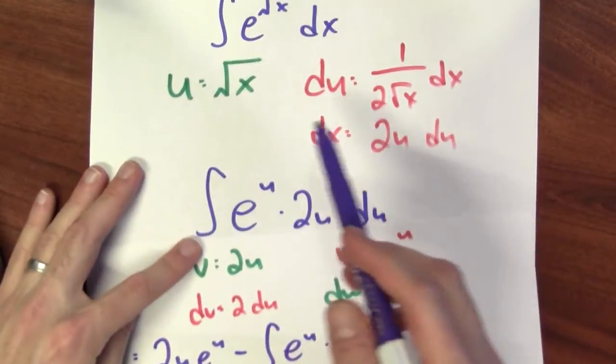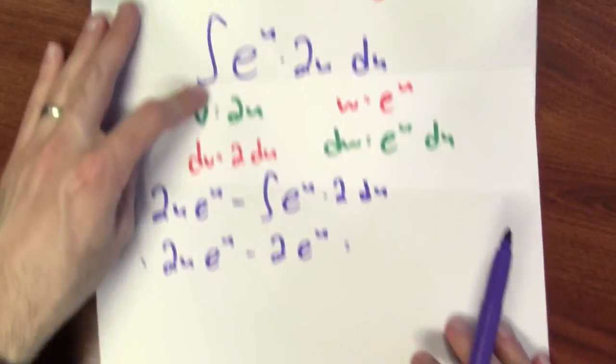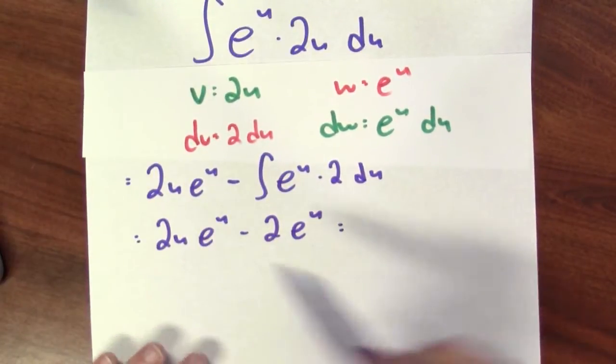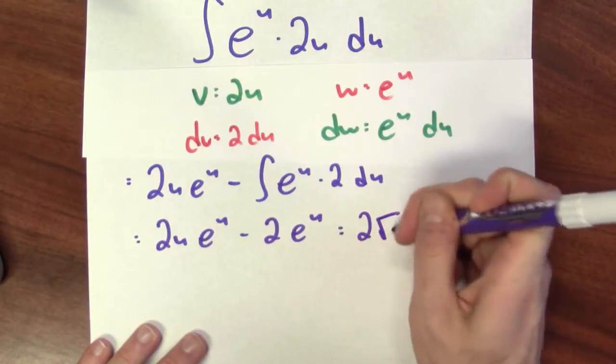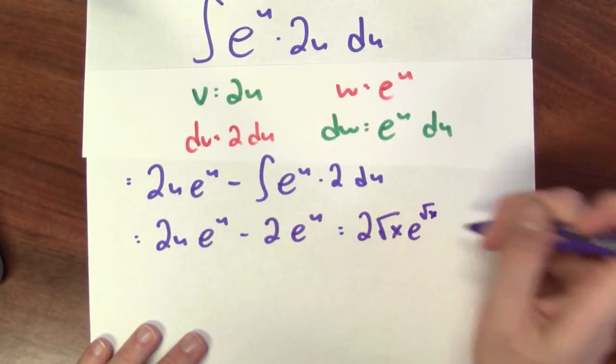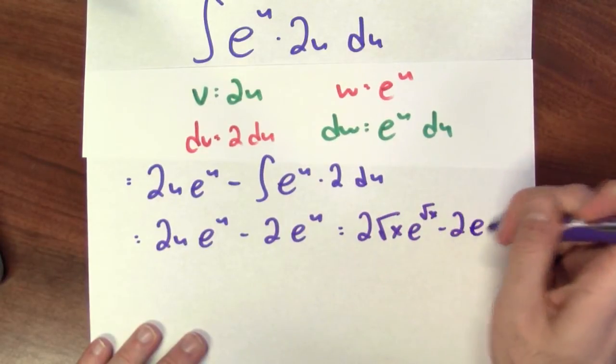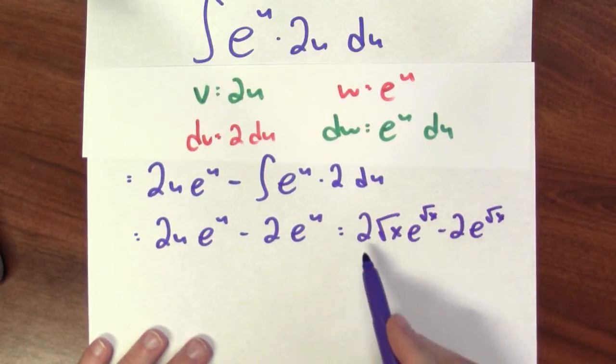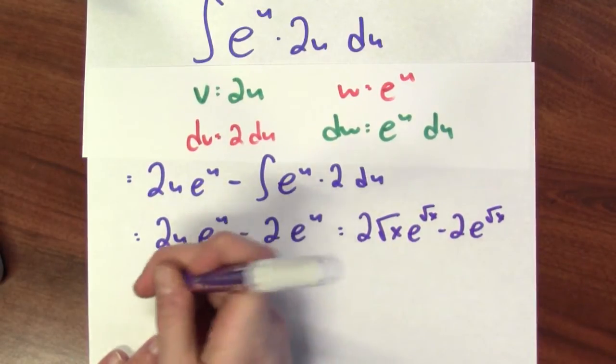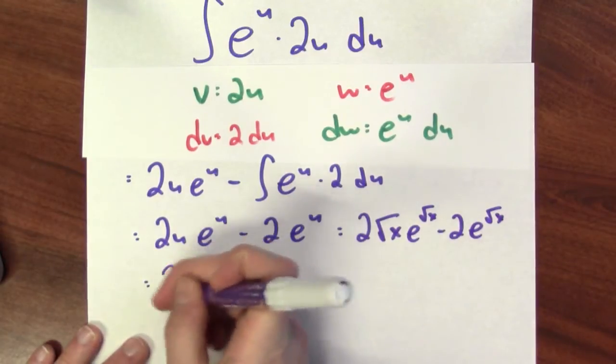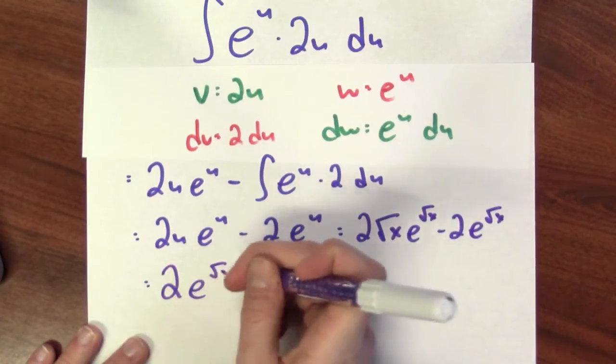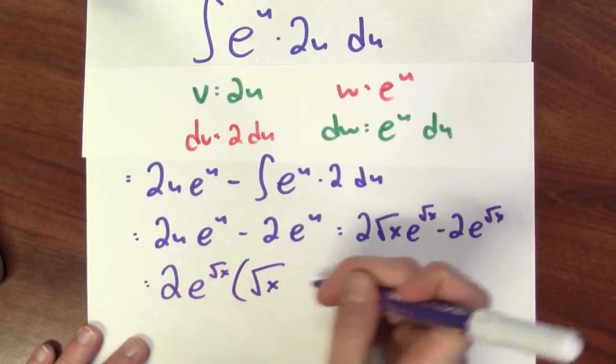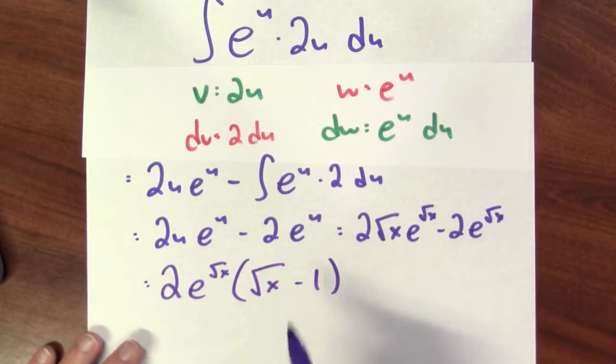I'm going to go back now and remember that I set u equal to the square root of x. So, this gives me 2 square root of x e to the square root of x minus 2e to the square root of x. If I notice there's a common factor of 2e to the square root of x, I could collect those terms and write this as 2e to the square root of x times the square root of x minus 1.